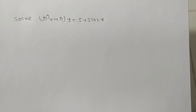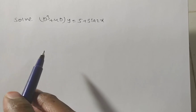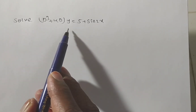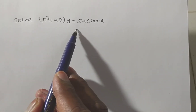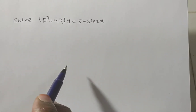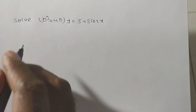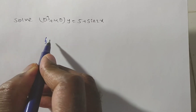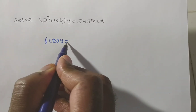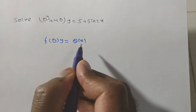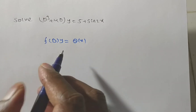We are solving the differential equation d³y + 4dy = 5 + sin(2x). By observation, we can say the given problem is in the operator form f(D)·y = Q(x).